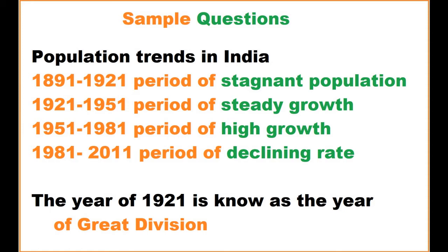Now we will discuss some sample questions likely to be asked in exams. Regarding population trends in India: from 1891 to 1921 was the period of stagnant population. From 1921 to 1951 was the period of steady growth. From 1951 to 1981 was the period of high growth. From 1981 to 2011 was the period of declining rate.